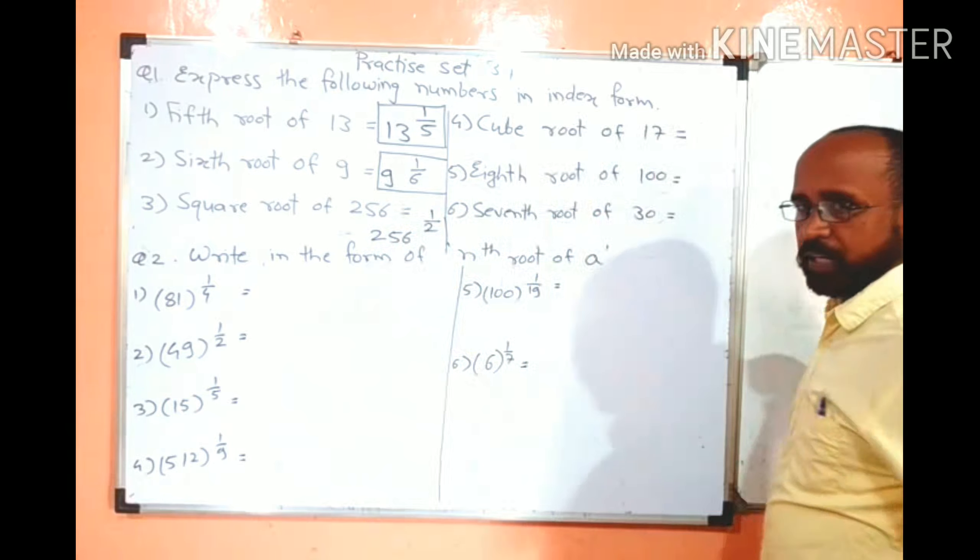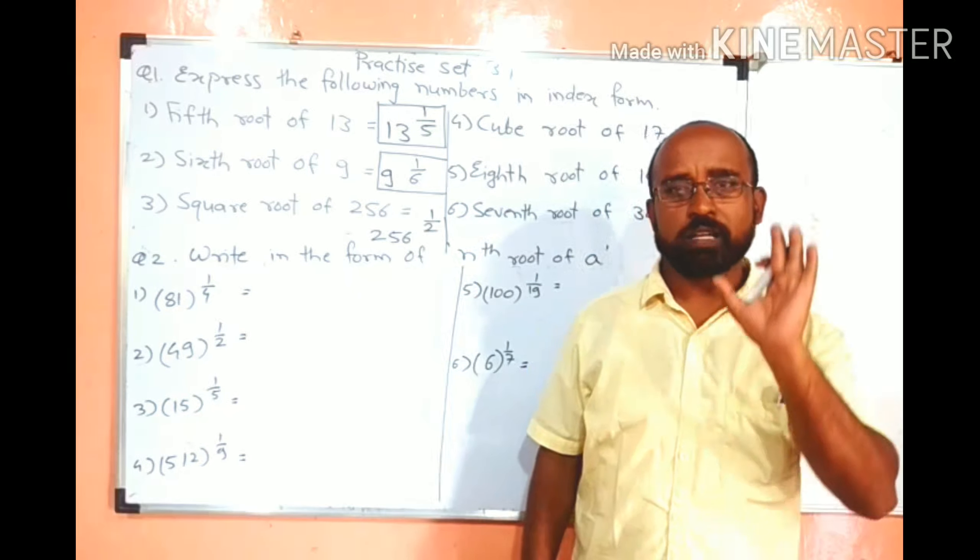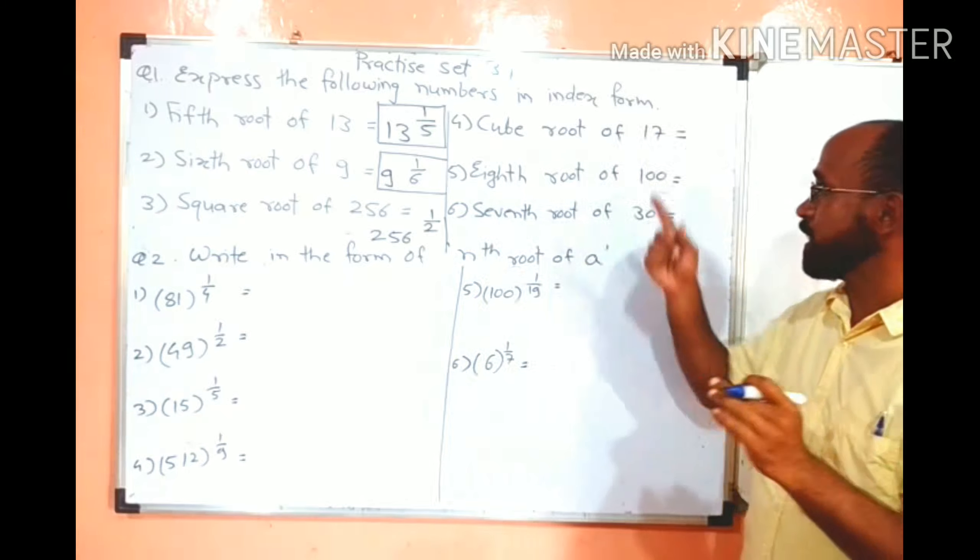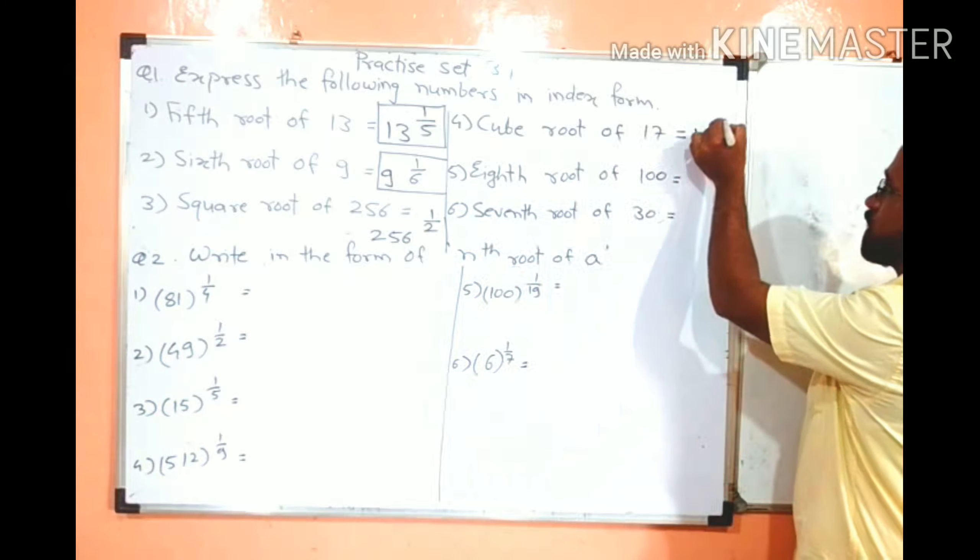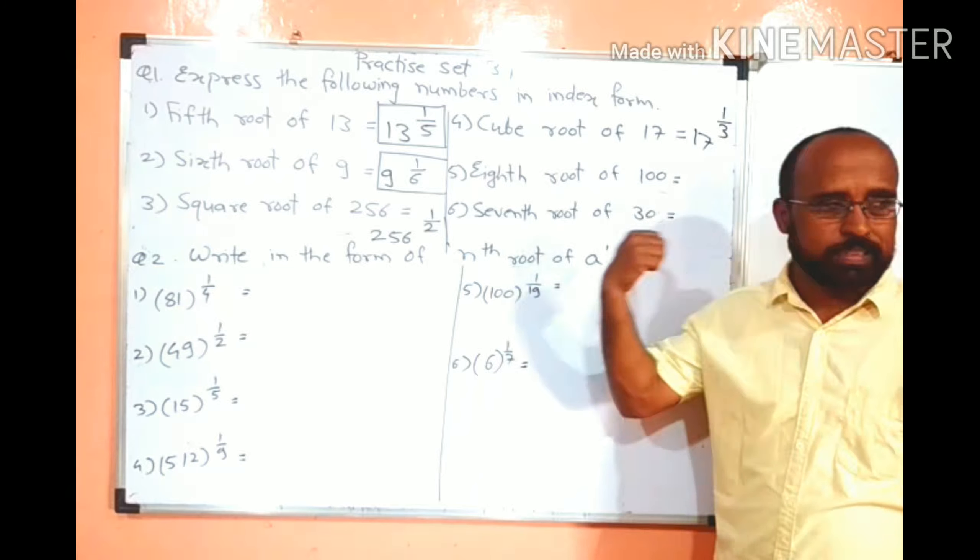Let us see next. Cube root of 17. Cube root means 3rd root. So base is 17, and root is 17 raised to 1 upon 3.